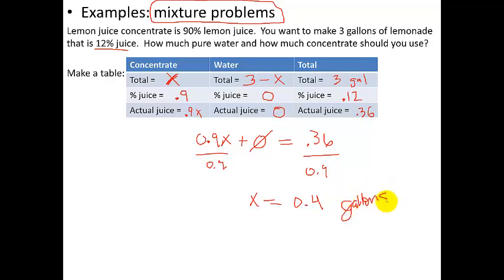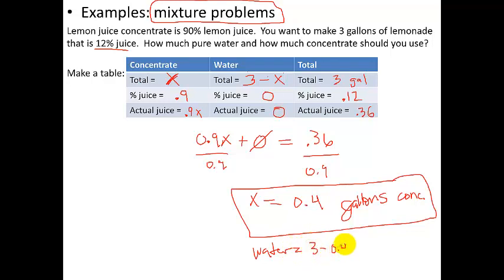So this means I need 0.4 gallons of concentrate. How much water do I need? 3 minus x. So water, 3 minus 0.4 equals 2.6 gallons of H2O.